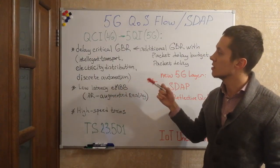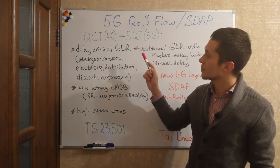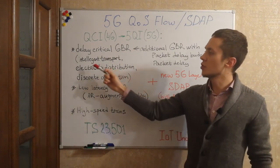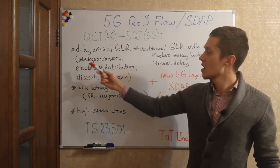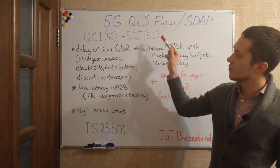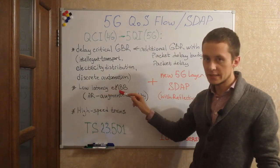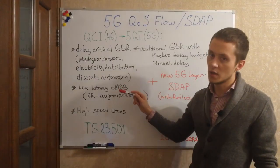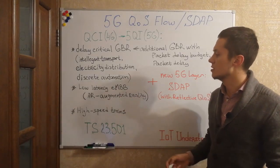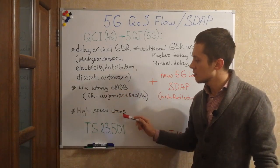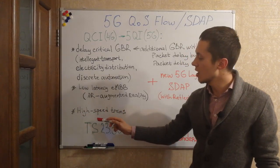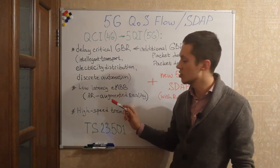One of them seems more interesting. For example, the 5G system can support delay-critical services with guaranteed bit rates — such services as intelligent transport systems, electricity distribution, and discrete automation. Some 5QI values may support low latency but at the same time enhanced mobile broadband services, such as augmented reality. And there are specifications relating to high-speed train communications and supporting it in 5G networks.